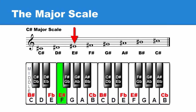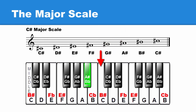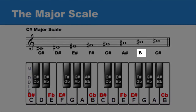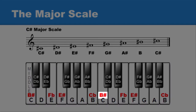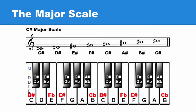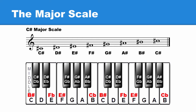Next, one half step up from E sharp is F sharp. Then three whole steps: G sharp, A sharp, and the last whole step is this key. We need some kind of B since that is the next letter in the musical alphabet. We'll use the enharmonic note name for this key, which is B sharp. Lastly, one half step up — a half step up from B sharp is C sharp. That's the C sharp major scale.